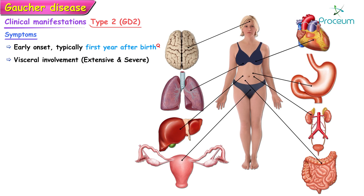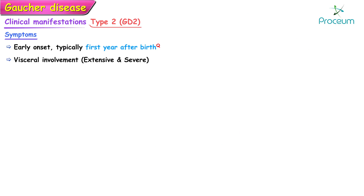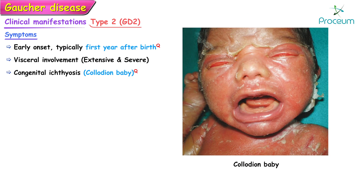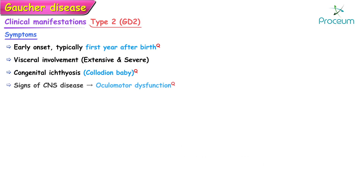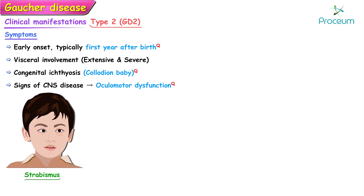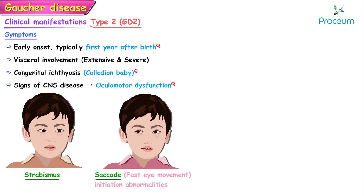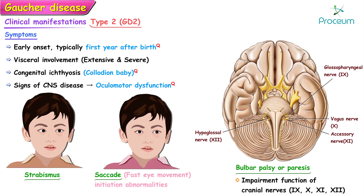Infants with Type 2 may present clinically with congenital ichthyosis, and such babies are known as collodion babies. The first sign of central nervous system disease typically occurs as oculomotor dysfunction, which may include strabismus, saccade initiation abnormalities, bulbar palsy, or paresis.